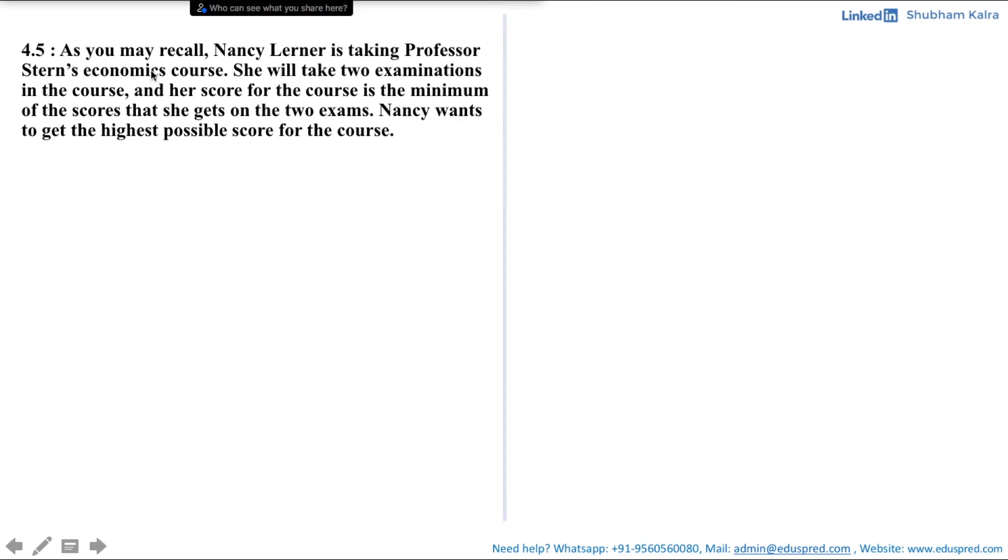In this video, we will be solving this question which says, as you may recall, Nancy Lerner is taking Professor Stern's economics course. She will take two examinations in the course and her score for the course is the minimum of the scores that she gets on the two exams.